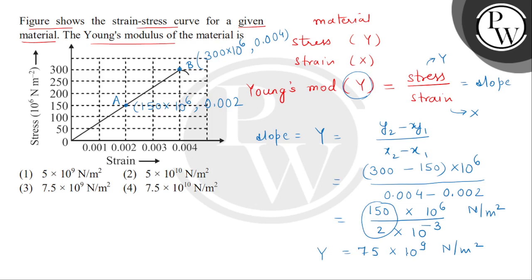Now, if we choose options, so 1 and 2 are not possible, 3 is also not possible. Correct answer will be 7.5 multiplied by 10 to the power 10 newton per meter square, hence final answer is option 4.